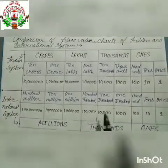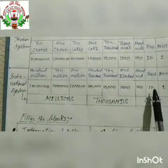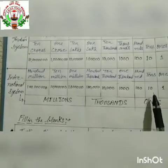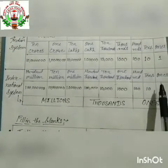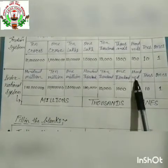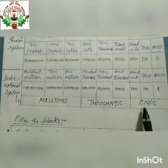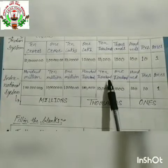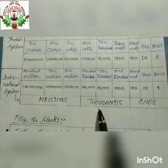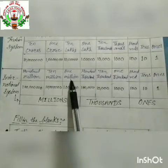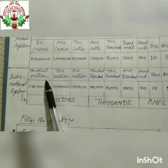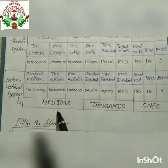Now in the international system, all periods have three places. The first three places from the left make ones, tens, hundreds — that is one period. Then one thousand, ten thousand, hundred thousand — that is the thousands period. Then one million, ten million, and hundred million — that is the millions period.